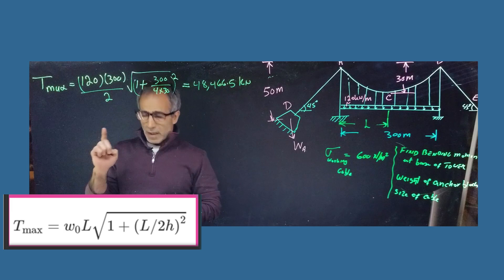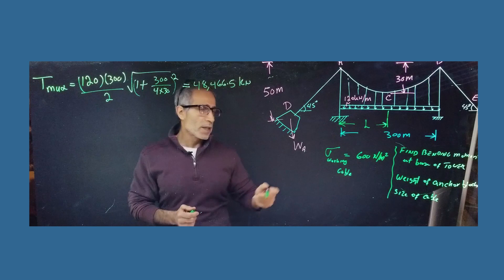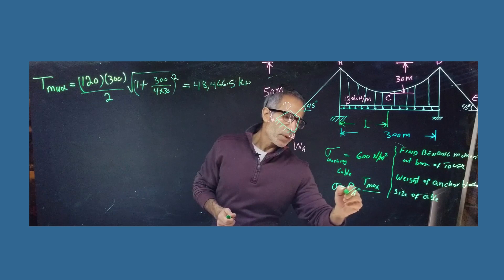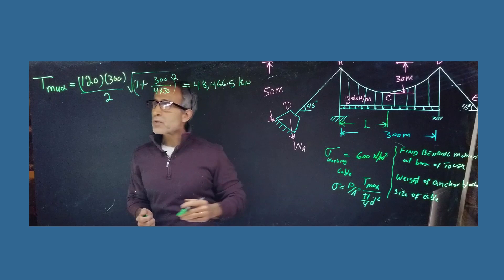Now, when we have that, we know, we learned this from a long time ago in the kindergarten that stress is equal P over A, in this case it's going to be shear max, I mean tension, maximum tension divided by the area, area is pi divided by 4, d squared or pi r squared.